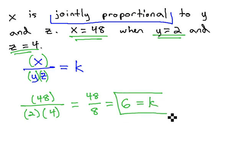In this problem, 6 is the constant of variation. In other words, if we take x and divide by the product of y and z, regardless of how they change in this situation described, you will always get 6 for a solution.